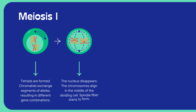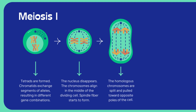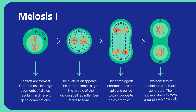Meiosis 1, Stage 2: the nucleus disappears, chromosomes align, and spindle fibers form. Stage 3: homologous chromosomes split and move to opposite poles. Stage 4: two non-identical cells are generated, each with a reformed nucleus.